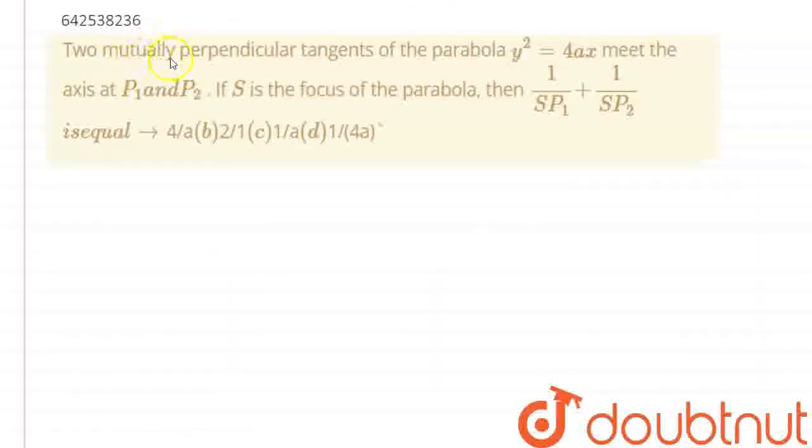Hello everyone, here the question is: two mutually perpendicular tangents of the parabola y square is equal to 4ax meet the x-axis at p1 and p2. If s is the focus of the parabola, then we have to find out 1 upon sp1 plus 1 upon sp2.